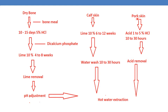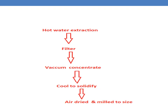Similarly, when pork skin is used, it is initially treated with 1 to 5% HCl for 10 to 30 hours, then subjected to acid removal, and sent for hot water extraction. After hot water extraction, it is allowed for filtration, then subjected to vacuum in order to concentrate. Then it is allowed to solidify, air dried, and milled to the desired size.